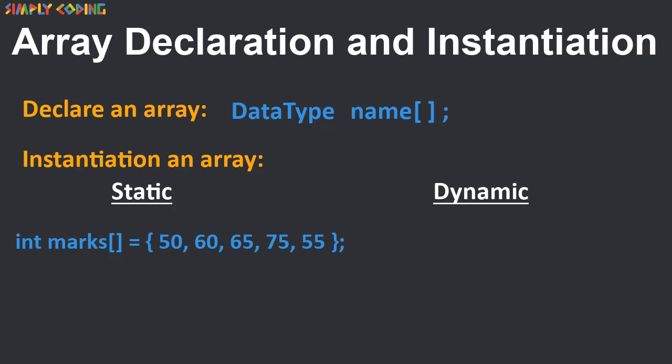In static, you assign the values to array directly. Like here, the marks of five subjects are directly assigned and it automatically gives the array a size of five.